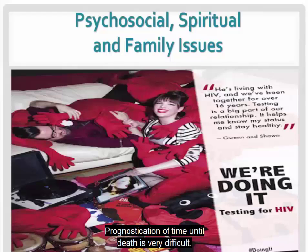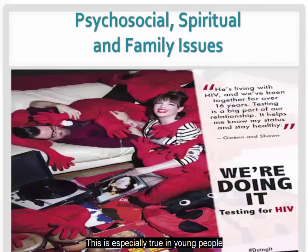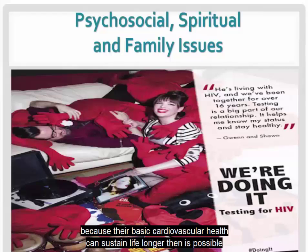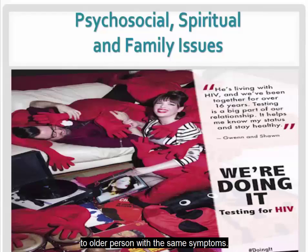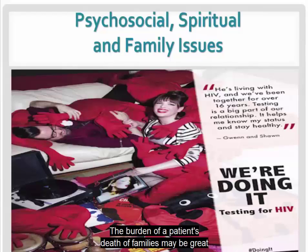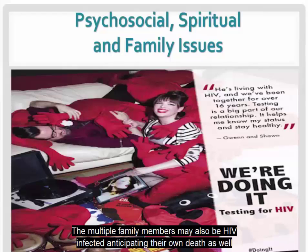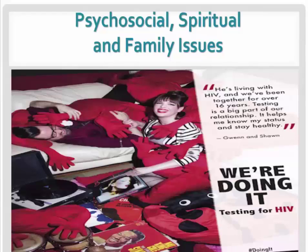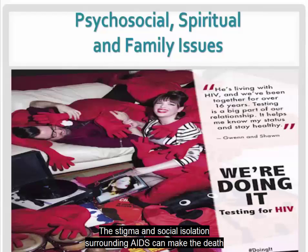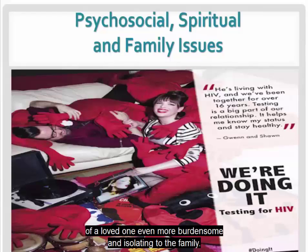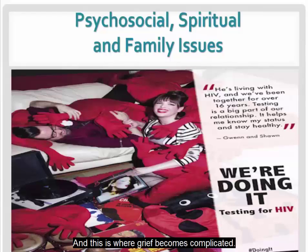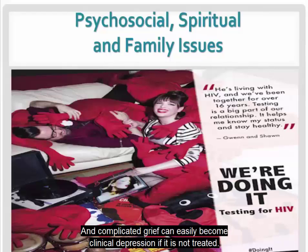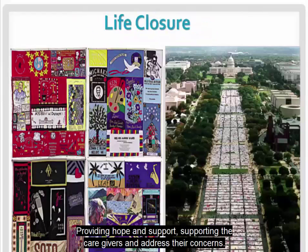Prognostication of time until death is very difficult, especially in young people because their basic cardiovascular health can sustain life longer than in an older person with the same symptoms. The burden of a patient's death on families may be great since AIDS affects young adults and children, and multiple family members may also be HIV-infected, anticipating their own death as well as grieving loved ones. The stigma and social isolation surrounding AIDS can make death even more burdensome and isolating to the family, and complicated grief can easily become clinical depression if not treated. Life closure involves providing hope and support, supporting caregivers, addressing their concerns, achieving a sense of control, and encouraging life closure.